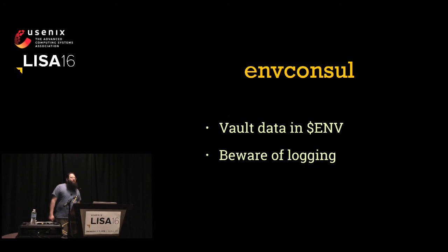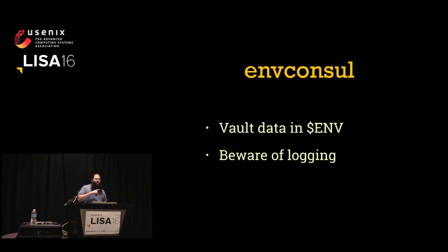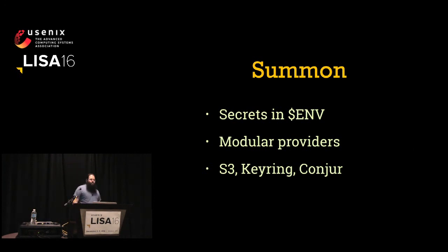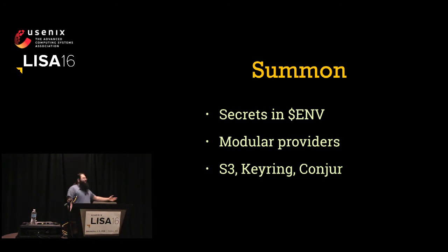Similar to Consul Templates is env-consul, but instead of writing things to files, it stores things in environment variables — I already said why I don't love this, but it does exist. And similar to env-consul is Summon, which has multiple backends: S3, Conjur, or local keyrings, but again it's storing them in environment variables.